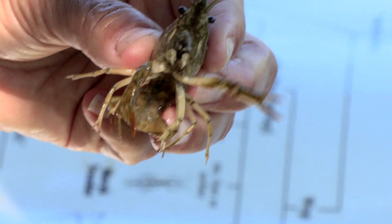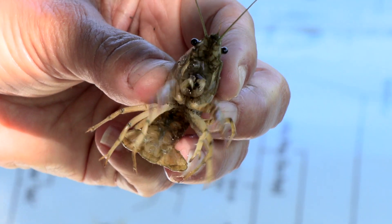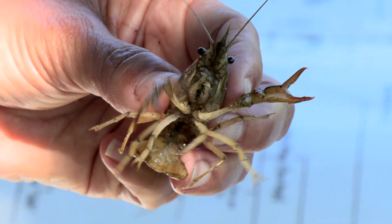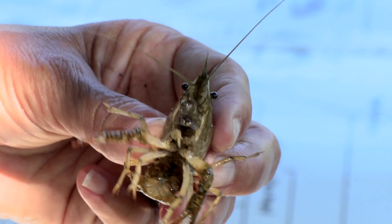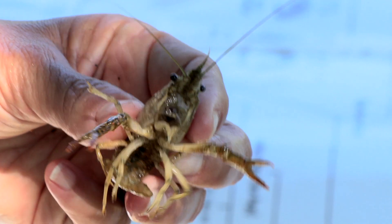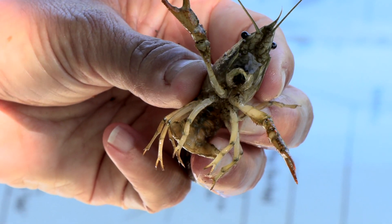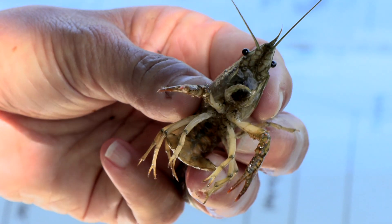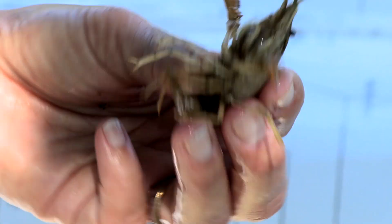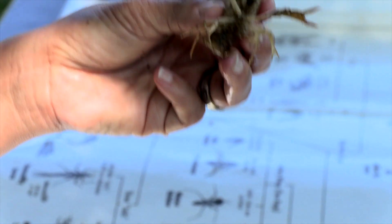Crawfish eat detritus down at the bottom of the wetland or pond system they live in, and they're also a delicacy for people who love to eat them — personally I think it's a lot of work, but people love to eat them.